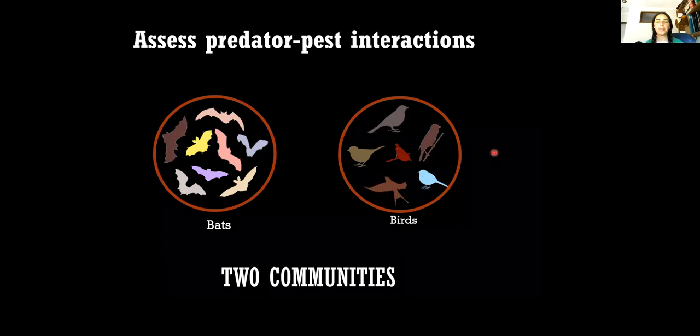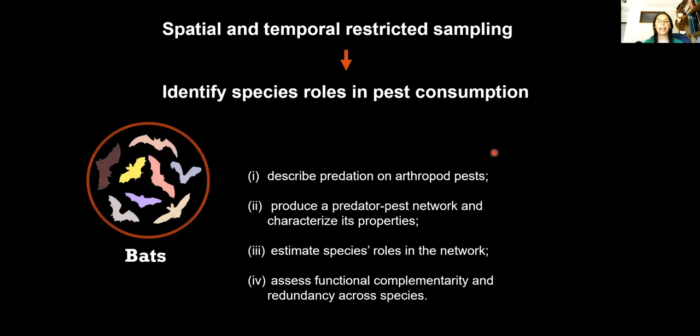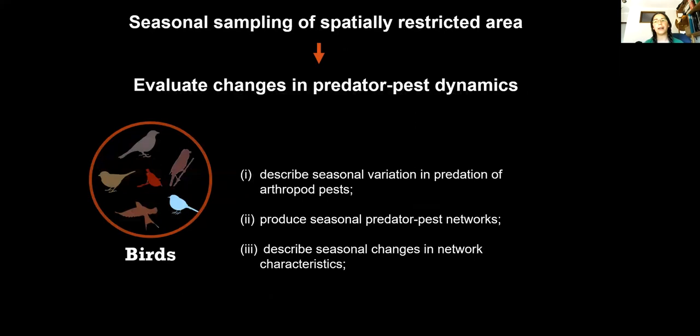Combined with powerful tools like DNA metabarcoding that can offer species level resolution to dietary items, ecological networks can provide key understanding of species roles in the provision of ecosystem services. I'm going to present two practical case studies on how we can use ecological networks and metabarcoding to better understand predator-pest interactions. One study focuses on a community of bats while the other focuses on a community of birds. For the bats we conducted spatial and temporal restricted sampling in order to identify the roles that different species play in pest consumption. We wanted to describe predation on arthropod pests, produce a network, assess the species role in the network, and understand functional complementarity and redundancy across species to identify key species for the service. For birds we conducted spatial restricted sampling but seasonal sampling every month to describe seasonal variation in predation of arthropod pests, produce seasonal predator-pest networks, and describe seasonal changes in network properties.